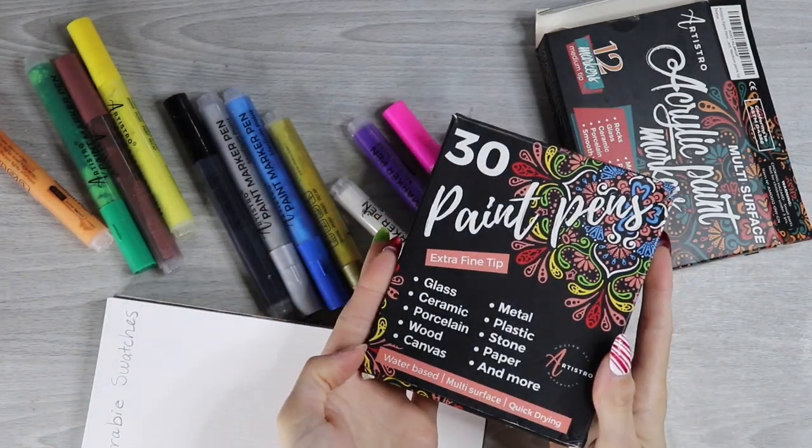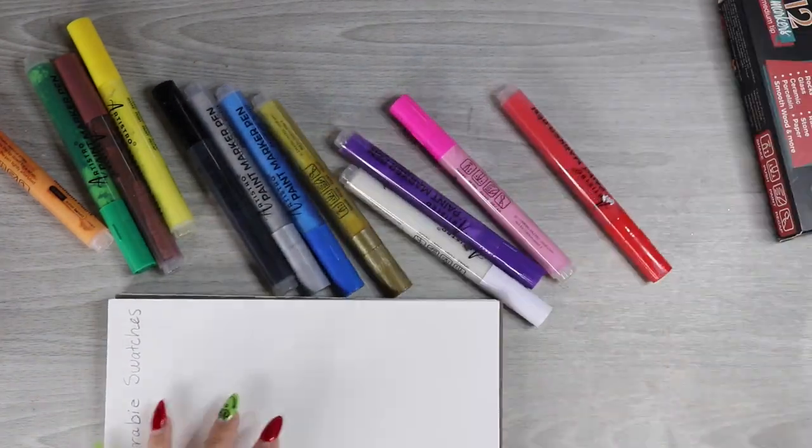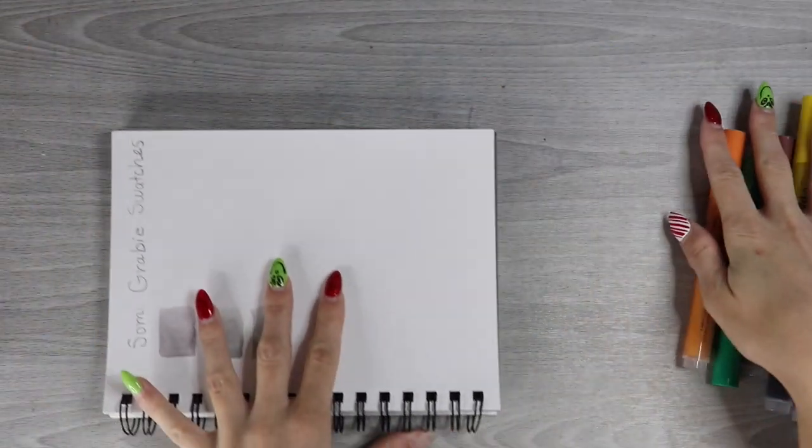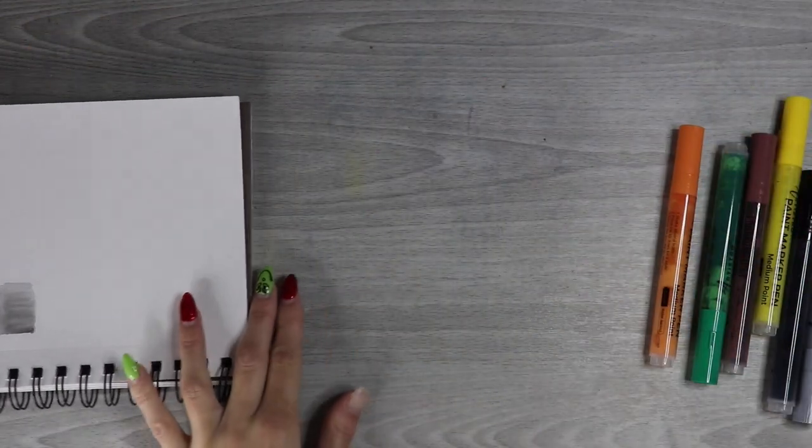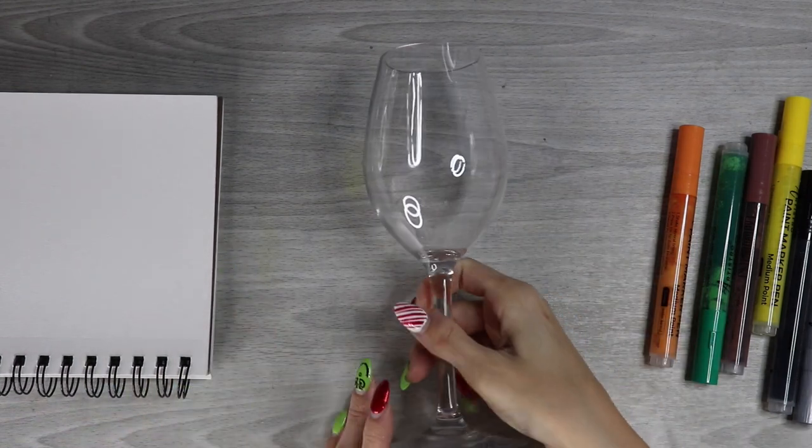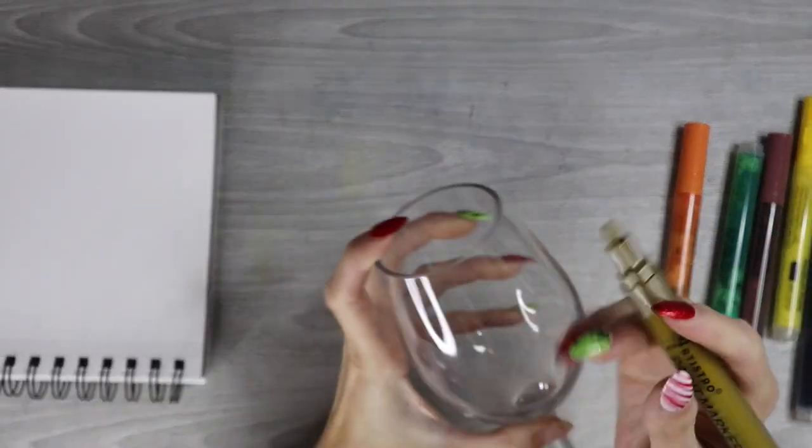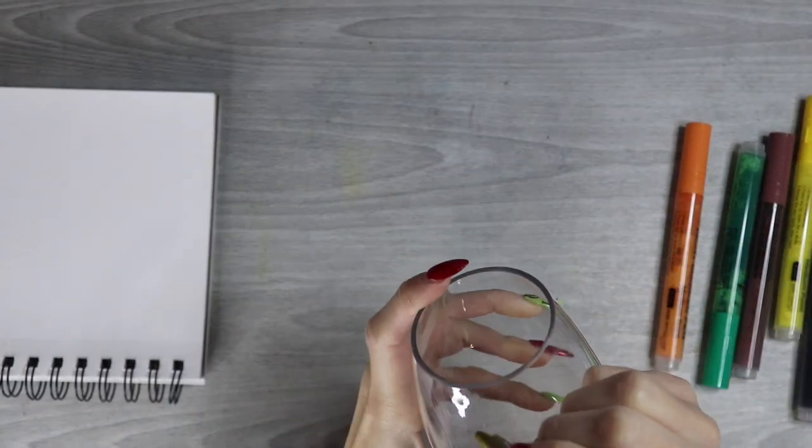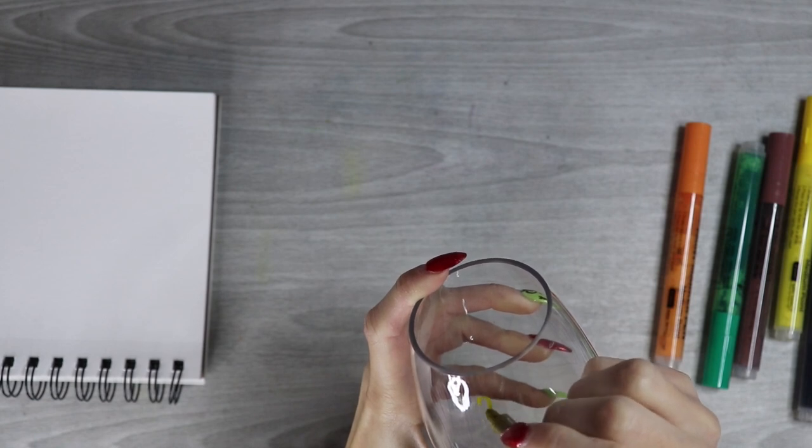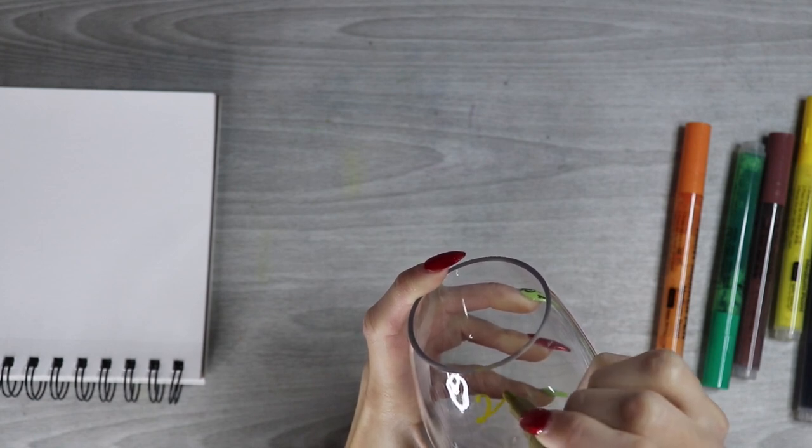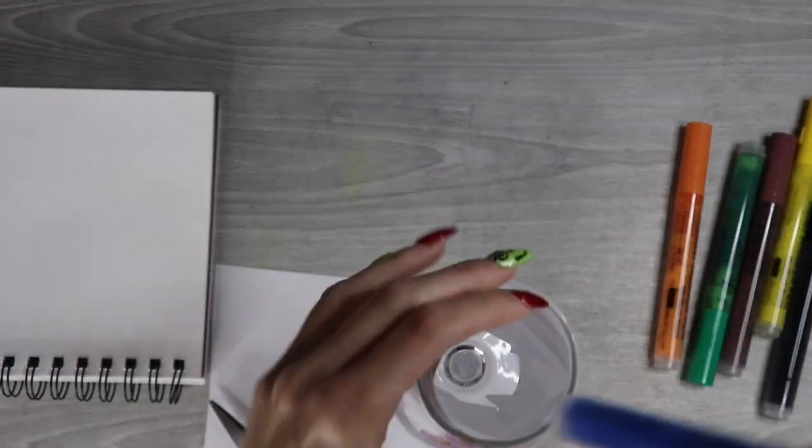I also have acrylic paint pens by Artistra. However, these I find a lot harder to prime and just use in general on a lot of surfaces. I'm sure they would be okay on plastic, but I really like the felt marker tips rather than the finer point for acrylic paint pens or markers. I suppose it could just be the one brand, but I haven't really tried any others. So I decided to just go with the markers for this project.